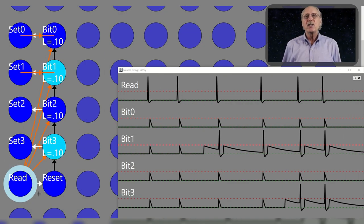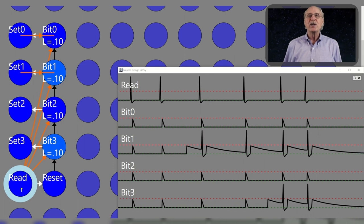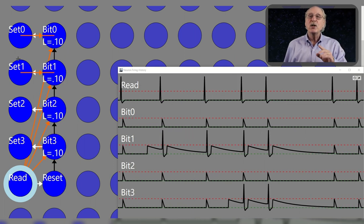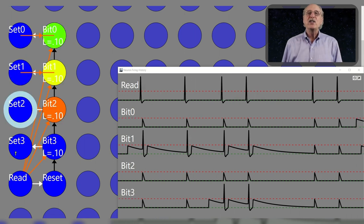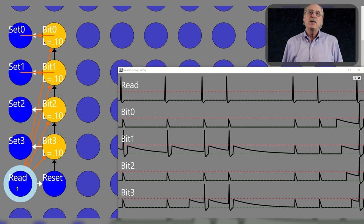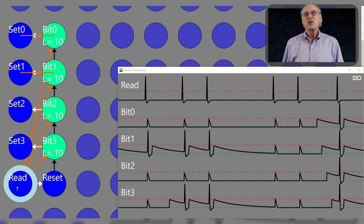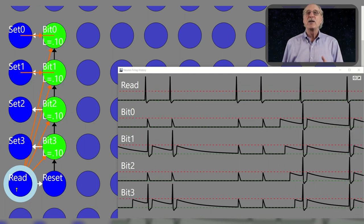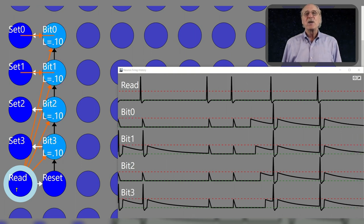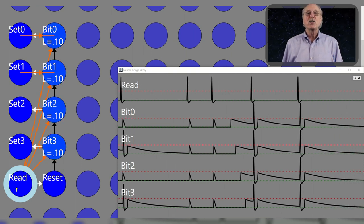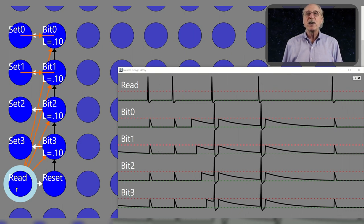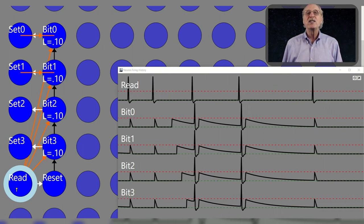To make this a bit more realistic, we'll add leakage back into the mix. Now the memory bit must be read before the internal charge leaks away. The reset signal becomes less necessary, because if you just wait a second or two, the memory will fade away on its own. As long as you keep reading the memory, though, it will persist. This memory is using a mechanism of charge storage very similar to dynamic RAM, which must be refreshed periodically before the memory content leaks away.